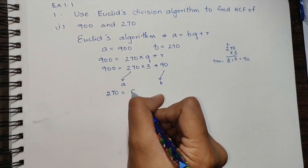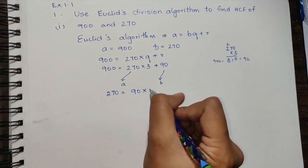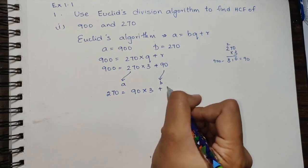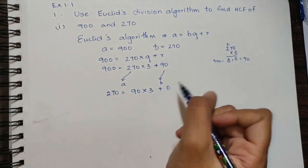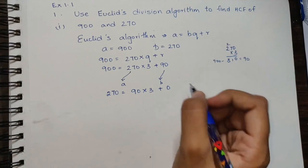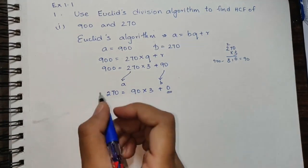270 equals 90 into 3 plus 0. 90 times 3 is 270, and the remainder is 0. Since the remainder is 0...